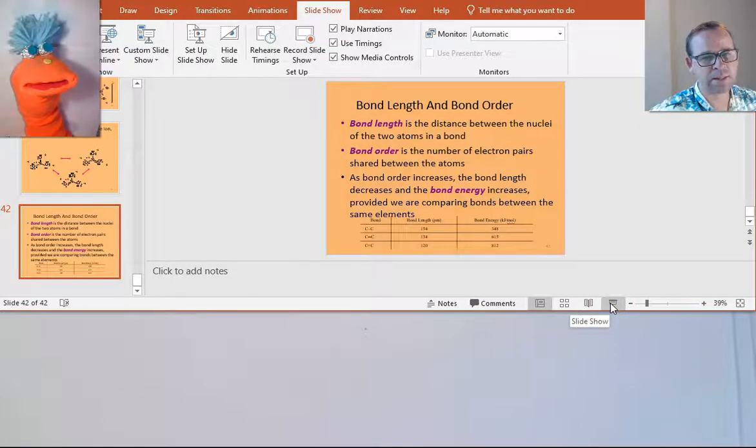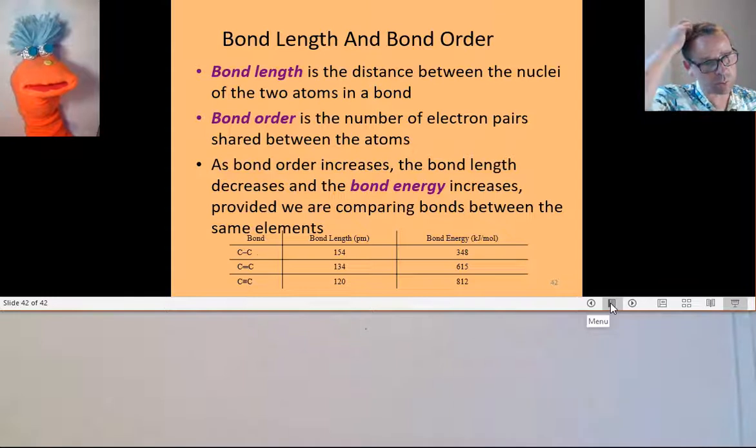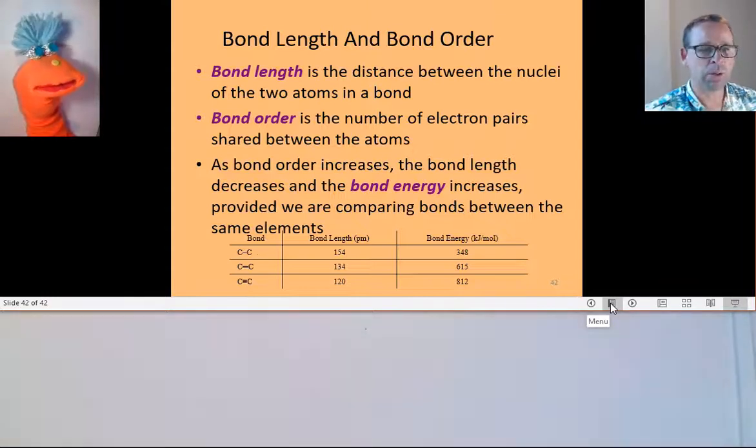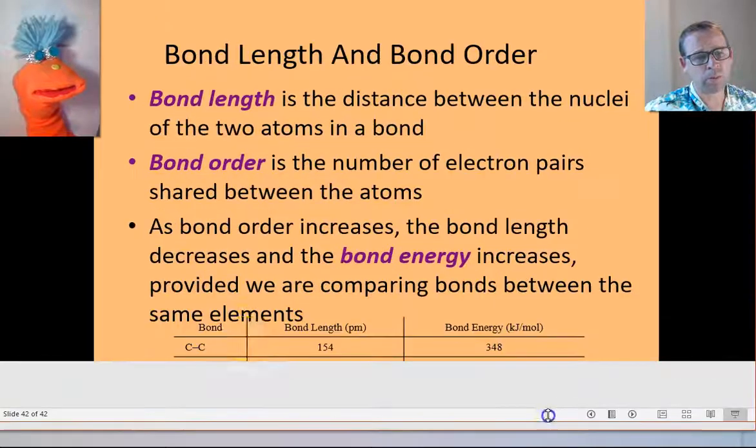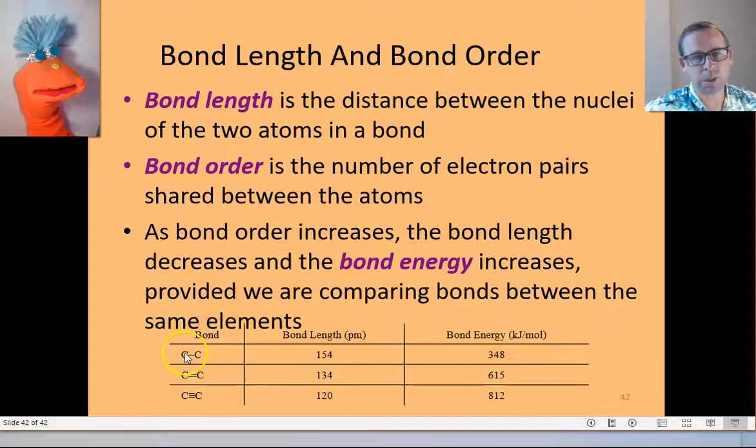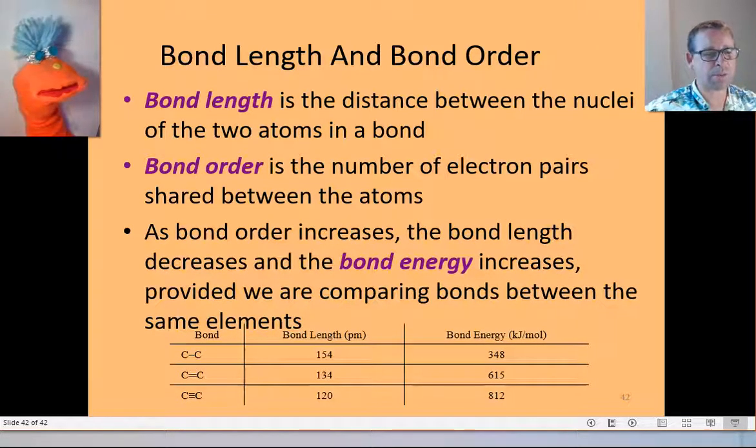All right, and then the last thing that we're going to pay attention to here is what we call bond order. Bond order is simply kind of measuring the bond, how much electron density there is between two atoms, and we say that the bond order is 1 when you're talking about a single bond, the bond order is 2 when you're talking about a double bond, and the bond order is 3 when you're talking about a triple bond. You're numbering the pairs of electrons that are being shared between the two atoms.